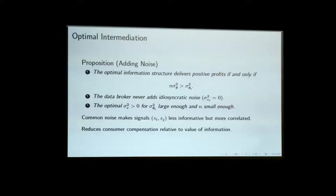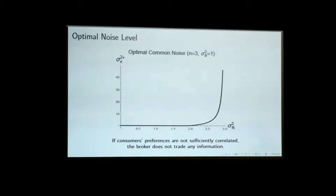In terms of how much information the data intermediary should optimally provide: we can show he would never want to add idiosyncratic noise, but it will be profitable to not forward all the information — just a noisy version of the information collected. So there will be some residual privacy as part of the optimal information structure. Looking at the plot: as the individual source of variance sigma-theta-i grows, more noise needs to be injected to have profitable trade of information. When idiosyncratic variation is large, I need more noise because I want to suppress the individual exposure of consumers to surplus extraction.